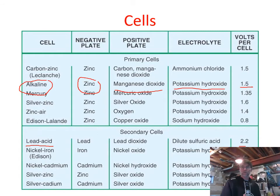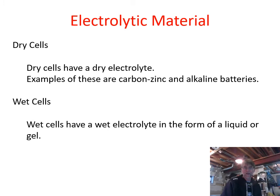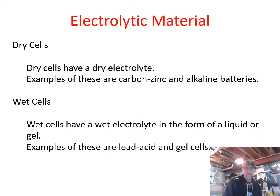We can also break batteries into two categories based on the electrolyte used: dry cell batteries and wet cell batteries. Dry cells have a dry electrolyte — carbon-zinc and alkaline batteries are examples. Wet cells use a liquid electrolyte — your car battery is the best example. The lead-acid battery has acid in it, and it used to be standard to top up the cells in a car battery because they are wet cells.